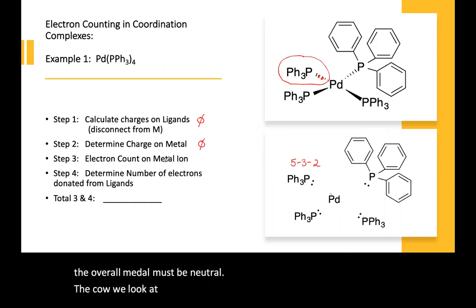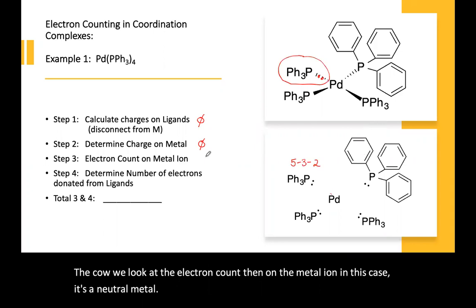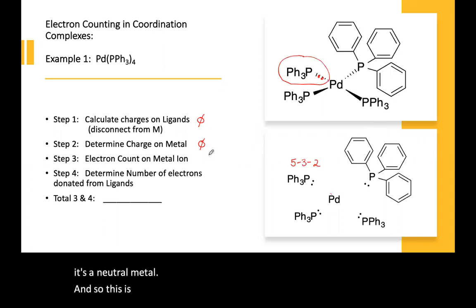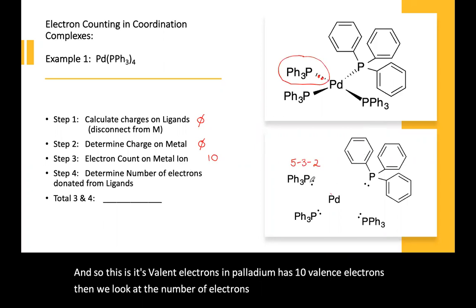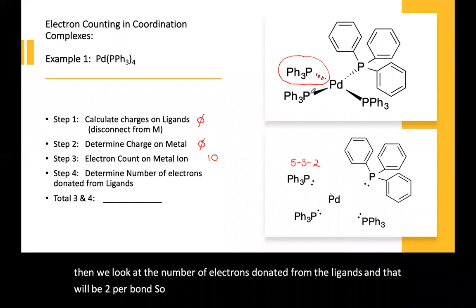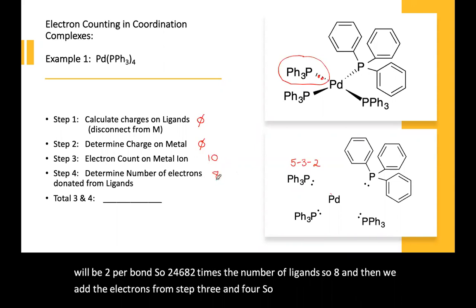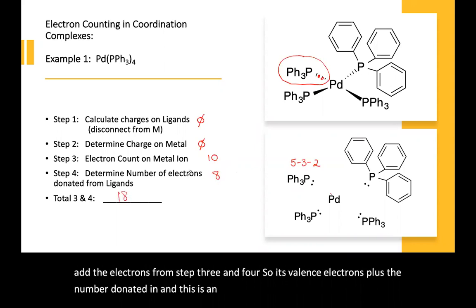We look at the electron count on the metal ion — in this case it's a neutral metal. Palladium has 10 valence electrons. Then we look at the number of electrons donated from the ligands, which is two per bond: two times the number of ligands, so eight. We add the valence electrons plus the number donated in: 10 plus 8. This is an 18-electron complex.